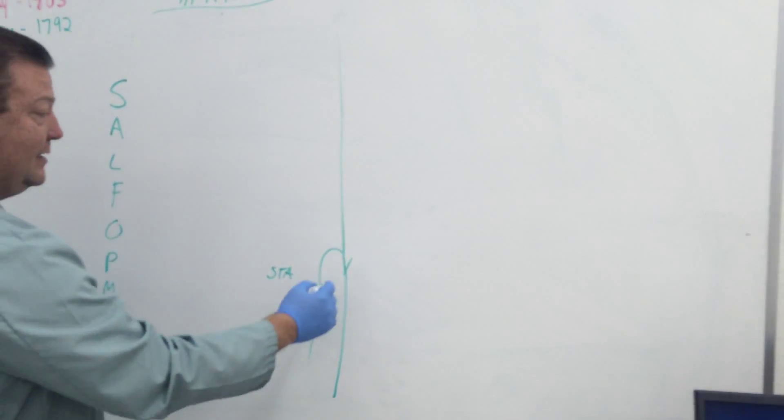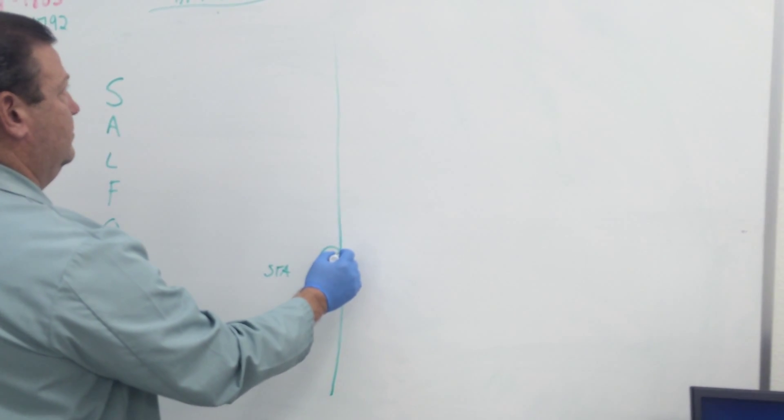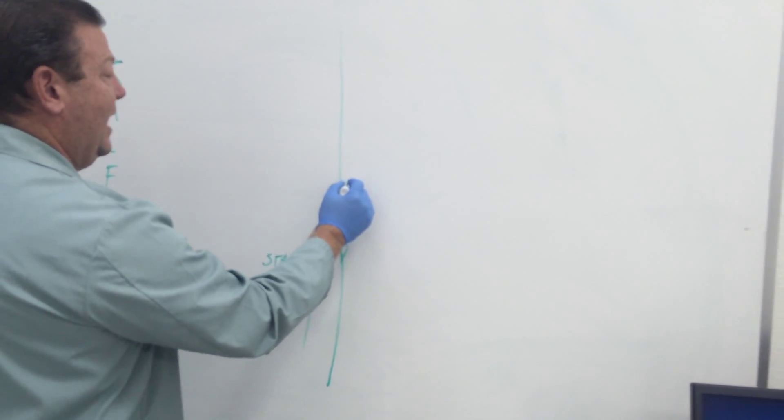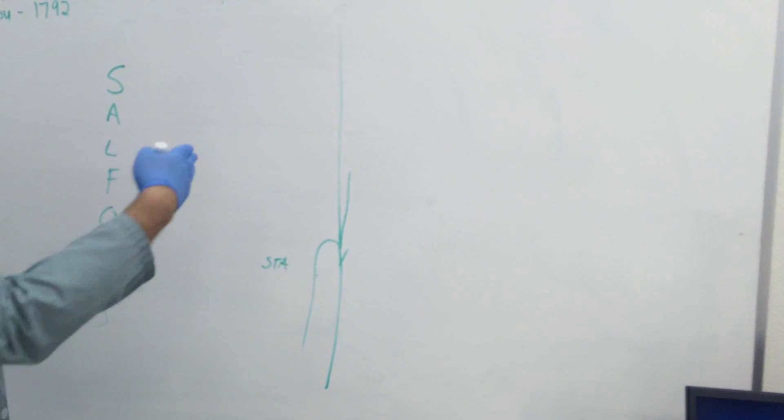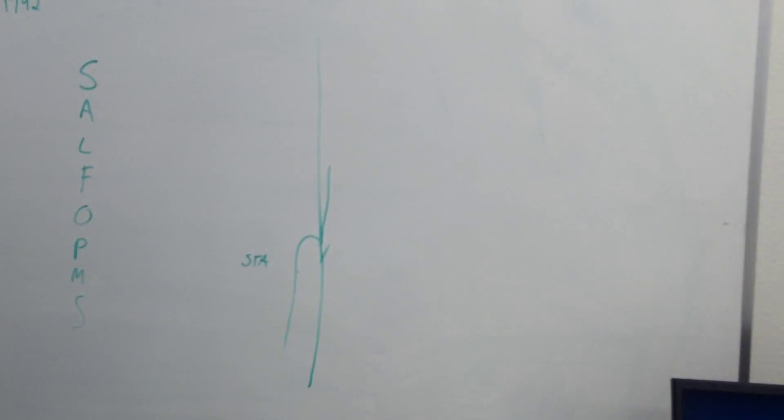The next one, ascending pharyngeal, is going to end up going up and actually turns medial and goes kind of into the board. This is my left one. It would go in and go over to my esophagus. Ascending pharyngeal.